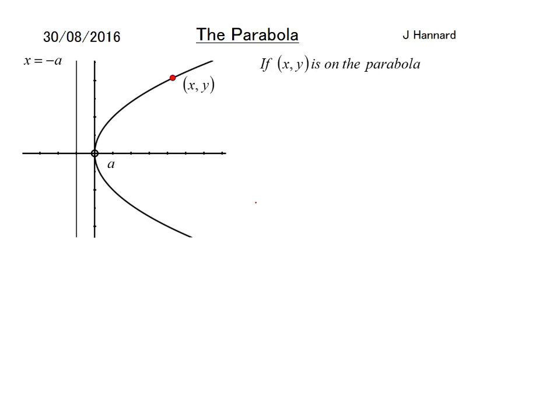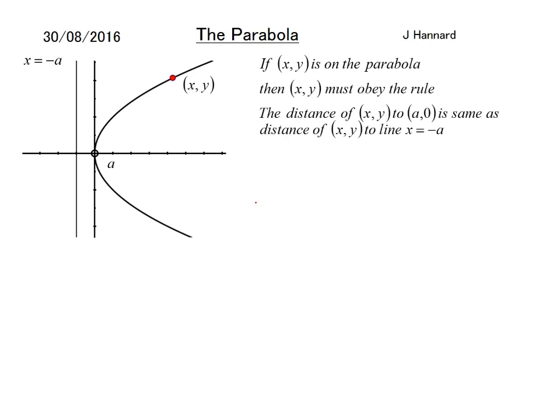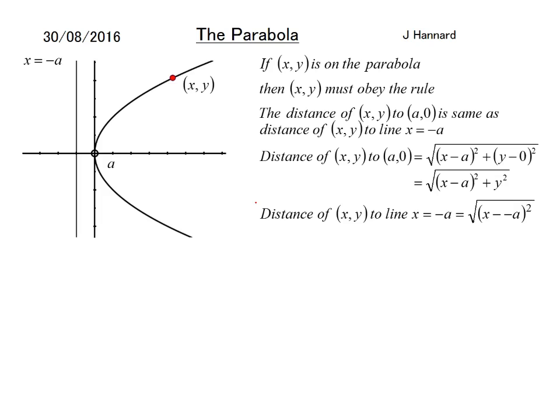So if (x, y) is on the parabola, then (x, y) must obey the rule. The distance of (x, y) to (a, 0) is the same as the distance (x, y) to the line x equals minus a. And we're going to use a bit of line theory here that you'll have learnt in FSMQ or core 1. It's pretty simple maths considering what we're doing. So the distance of (x, y) to (a, 0) is the square root of (x minus a) squared add (y minus 0) squared which is that.